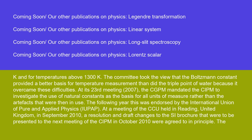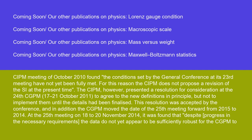At a meeting of the CCU held in Reading, United Kingdom, in September 2010, a resolution and draft changes to the SI brochure to be presented to the CIPM in October 2010 were agreed to in principle. The CIPM meeting of October 2010 found the conditions set by the General Conference at its 23rd meeting had not yet been fully met, and so the CIPM did not propose a revision of the SI at that time. The CIPM presented a resolution for consideration at the 24th CGPM (17–21 October 2011) to agree to the new definitions in principle, but not to implement them until details had been finalized. This resolution was accepted, and the CGPM moved the date of the 25th meeting forward from 2015 to 2014.